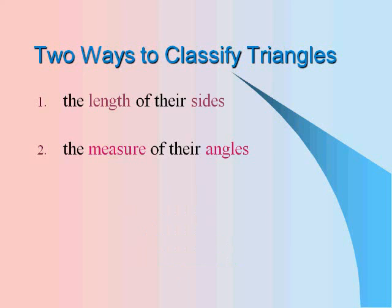There are two ways to classify triangles. First, by the length of their sides, and second, by the measure of their angles.